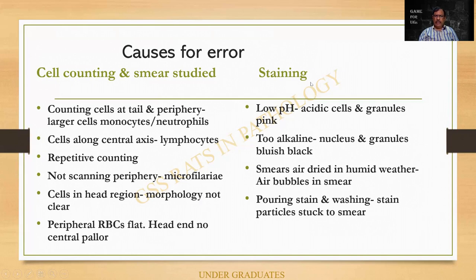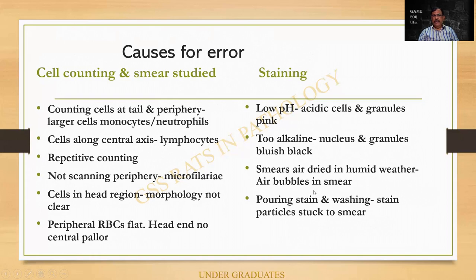Technically, errors can also occur because of staining. A low (acid) pH means all the cells appear pink — no blue granules are found. Too alkaline means they become dark blue or bluish black. Sometimes when the smear is air dried in humid weather, there can be air bubbles. A common mistake after staining is complete: the technician pours off the stain and tries to wash it under tap water — when you pour off, all the Leishman particles stick to the smear and you cannot get rid of them.